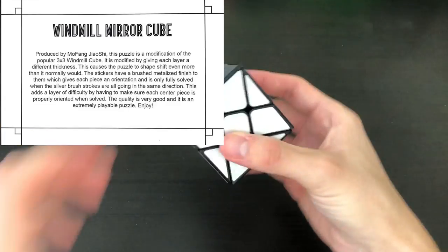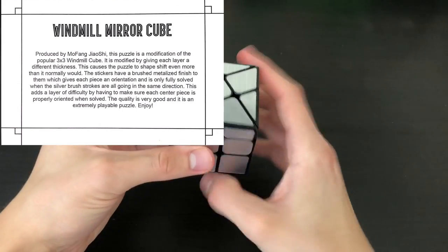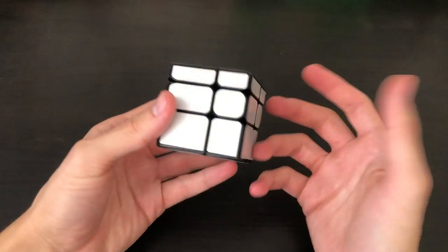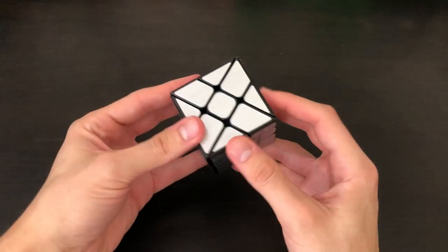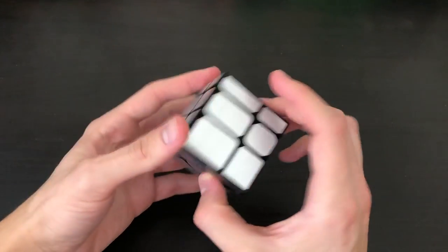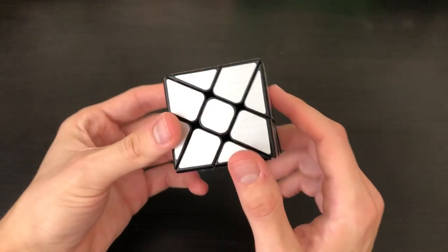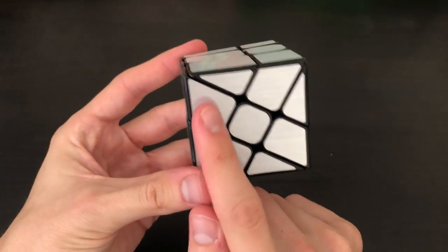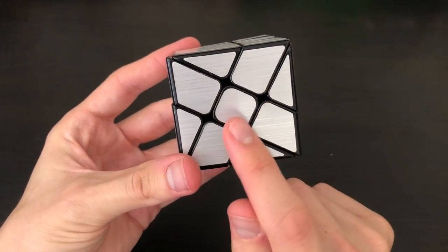So here we basically just have exactly what it is - it's a windmill cube but it is also a mirror cube where each layer is a different height. And with everything being metallic you notice there are these strokes going in one direction. So this thing is rotated 90 degrees, you notice these lines going this way and then this one you notice these lines going up and down.